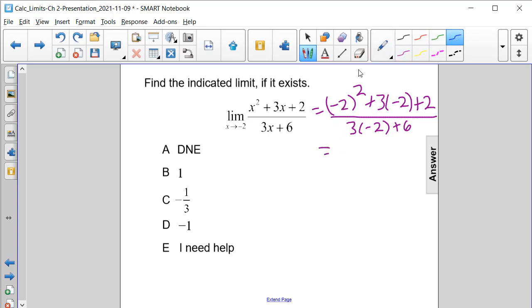And when we evaluate this, we'll have 4 minus 6 plus 2. Well, that's going to be 0. So we have 0 divided by negative 6 plus 6 is 0 also. So this is indeterminate form.